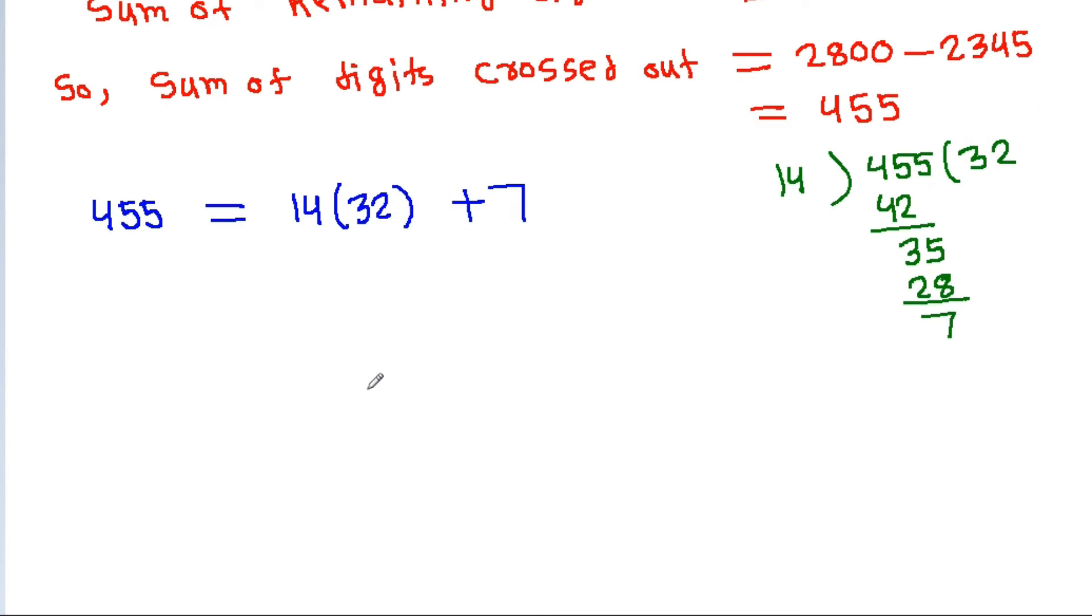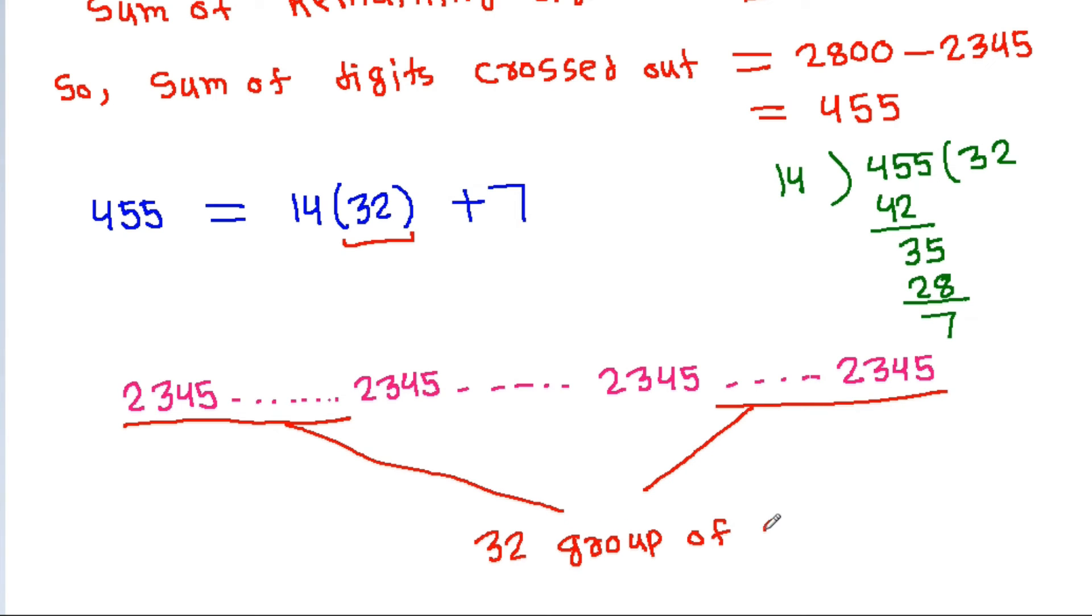And the integer is 2345, 2345, 2345. And 32 groups of 2345 are crossed out. And 2 plus 5 is 7, so 2 and 5 are also crossed out.